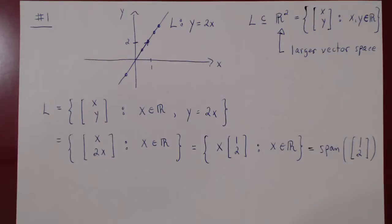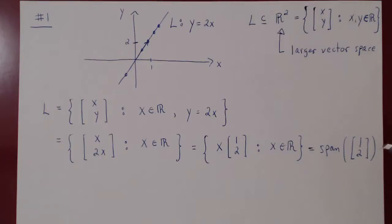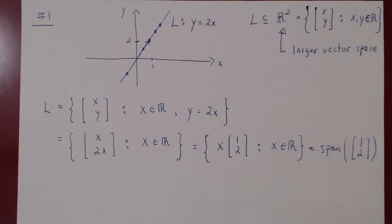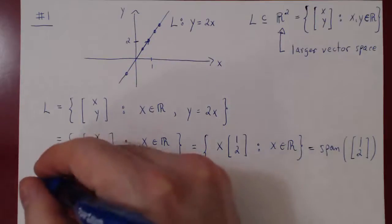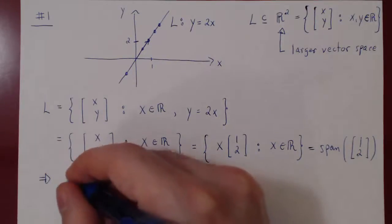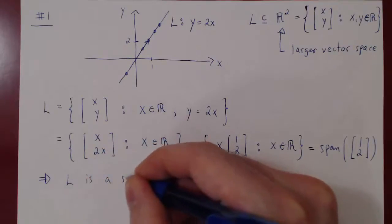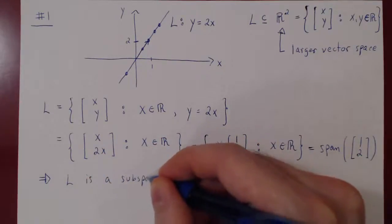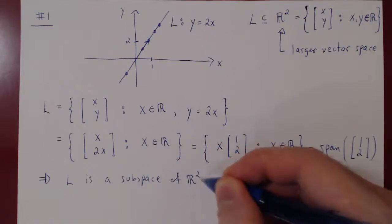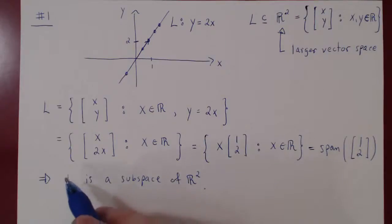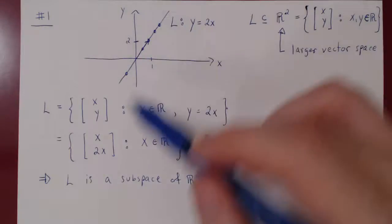Our first corollary of the subspace theorem states that the span of any number of vectors from a vector space is itself a vector space. The vector [1, 2] has two components, so it belongs to R², and R² is a vector space. Therefore, we have the span of one vector from a vector space, and so L is automatically a vector space — a subspace of R², a vector space living in the larger vector space that is R², the xy-plane.